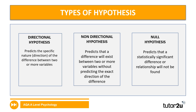Let's just do a quick recap from last session. We've got the directional hypothesis that says there's going to be a difference and specifies the direction of that difference. A non-directional says there's going to be a difference but doesn't specify the direction. And then we've got a null hypothesis that says there's not going to be a difference.